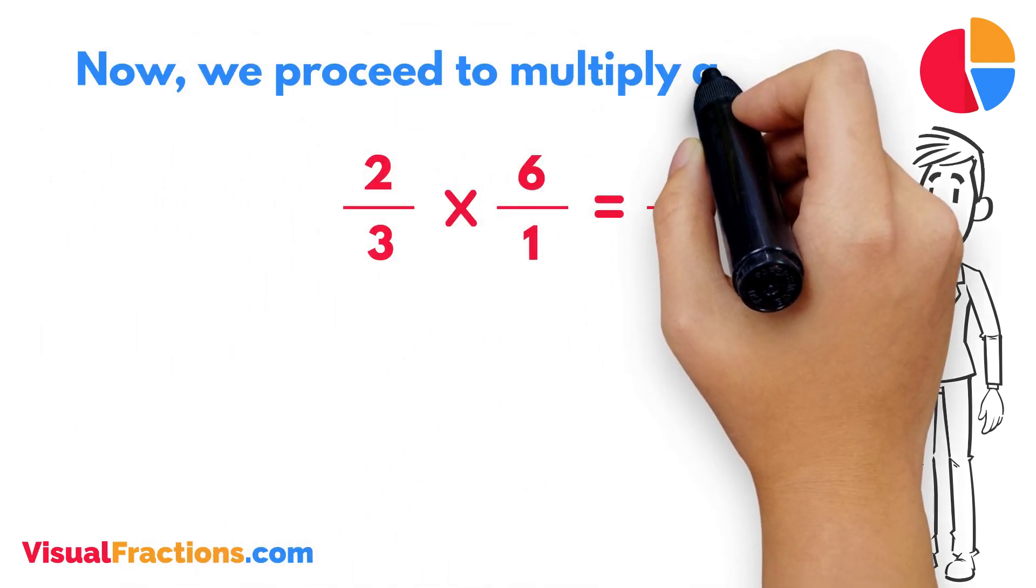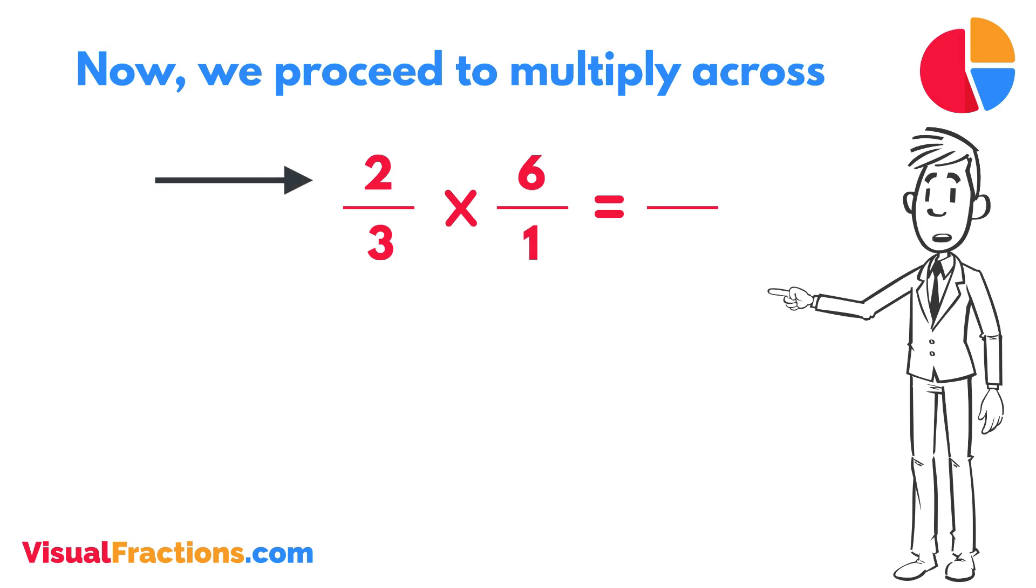Now, we proceed to multiply across. First, multiply the numerators, two times six equals twelve.